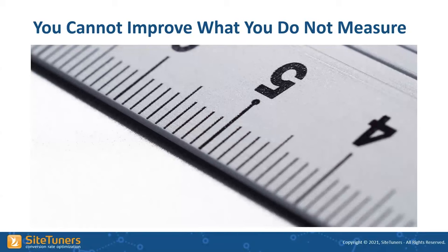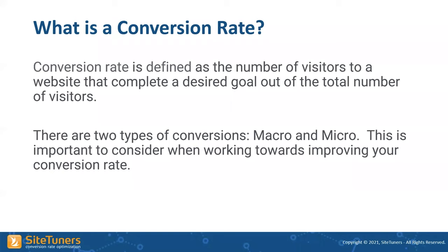Conversion rate is basically the number of visitors on a website that complete the desired goal. It's a percentage — if you have 100 visitors and one does the thing you want, you have a 1% conversion rate. There are also macro and micro conversions. For an e-commerce site, a macro conversion is somebody buys something; a micro conversion is they put it in the cart.